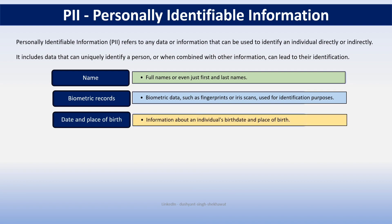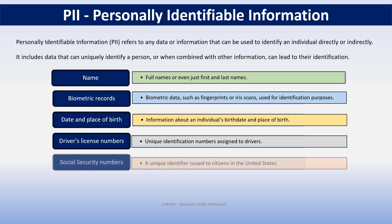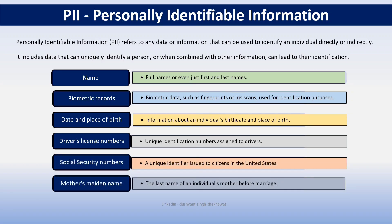PII also includes date and place of birth, driving license number, and social security number — all of these are PII. These are often targeted by cyber criminals because they can be used for identity theft, financial fraud, or any other malicious act.